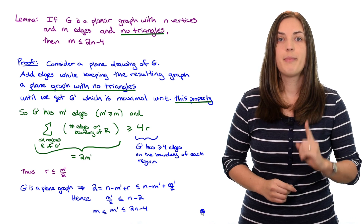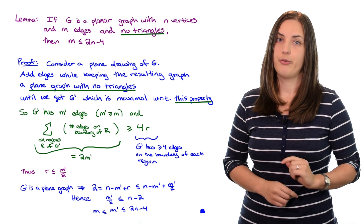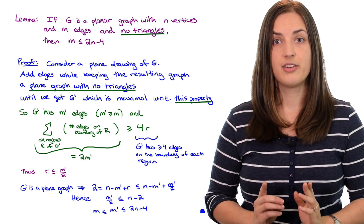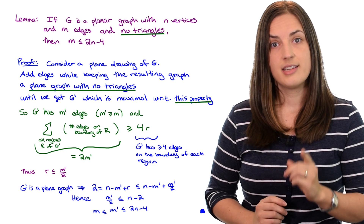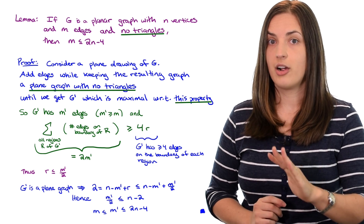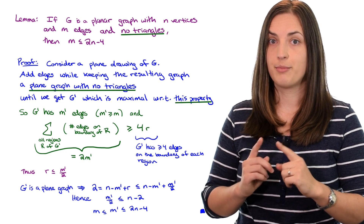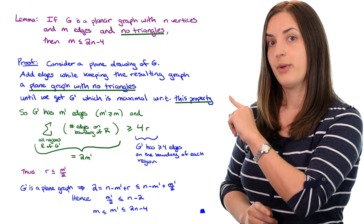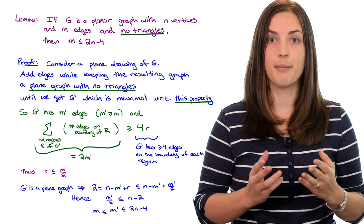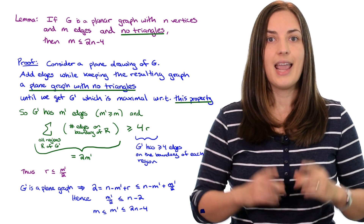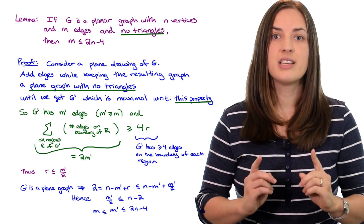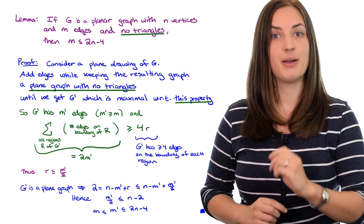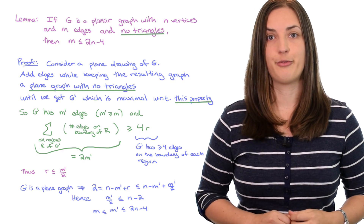Our original graph G also has n vertices but has m edges which is less than or equal to m prime. So we can conclude that m is also less than or equal to two times n minus four. We've proved the bound we were aiming for: as long as our graph is planar with no triangles, we have this bound on the number of edges.